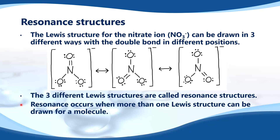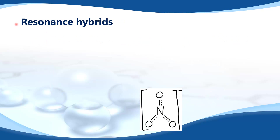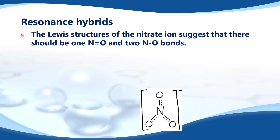Resonance occurs when more than one Lewis structure can be drawn for a molecule. Regarding resonance hybrids: the Lewis structures of the nitrate ion suggest that there should be one nitrogen-to-oxygen double bond and two nitrogen-to-oxygen single bonds.